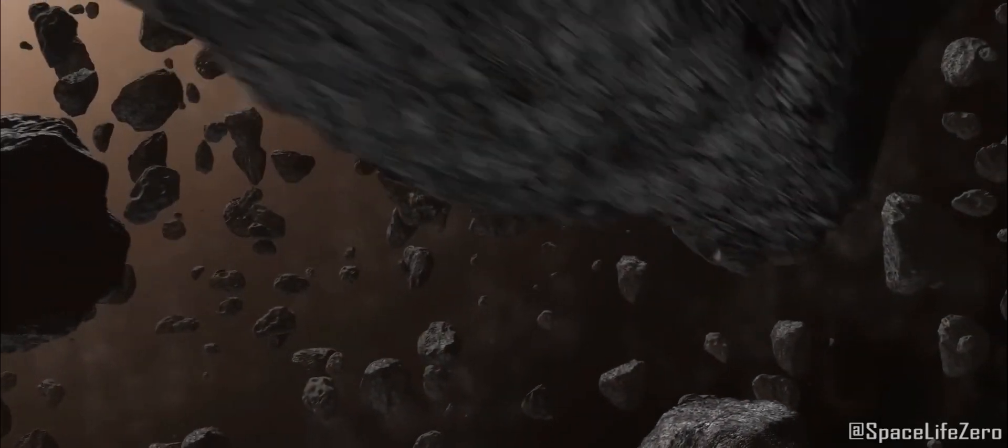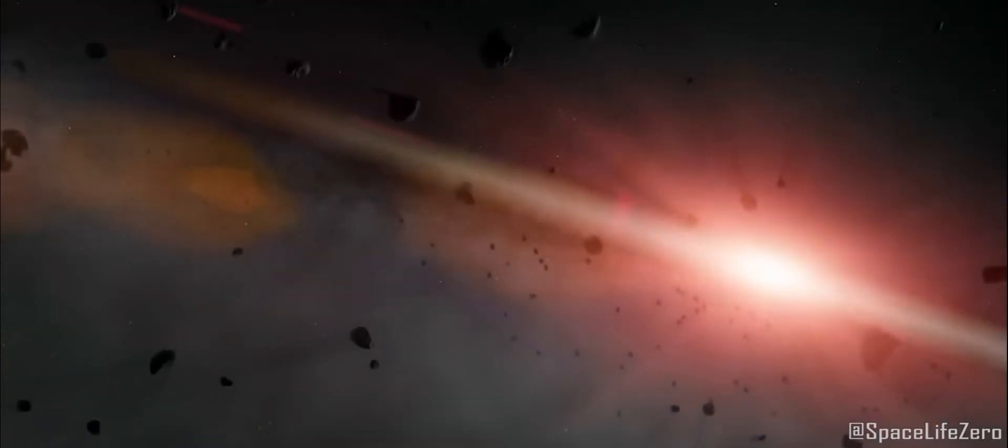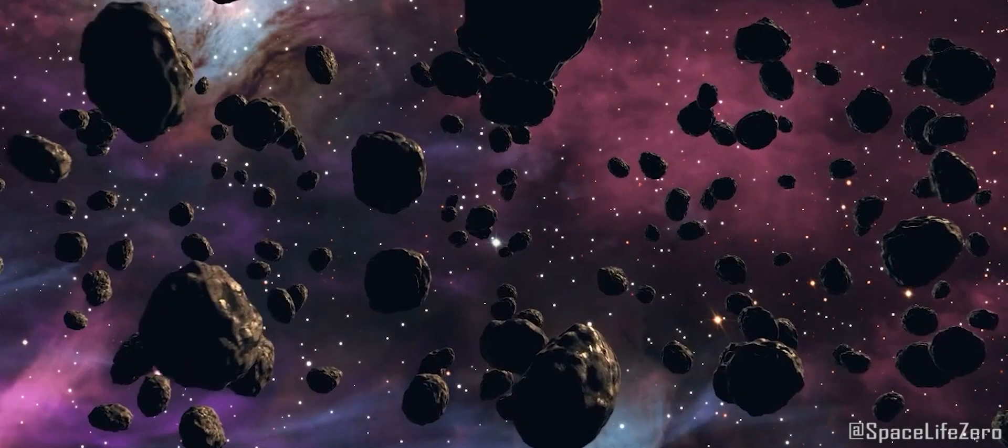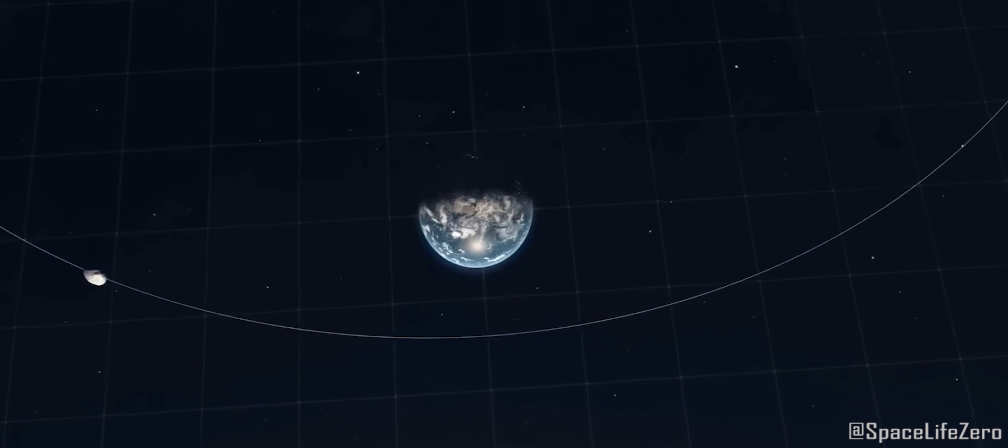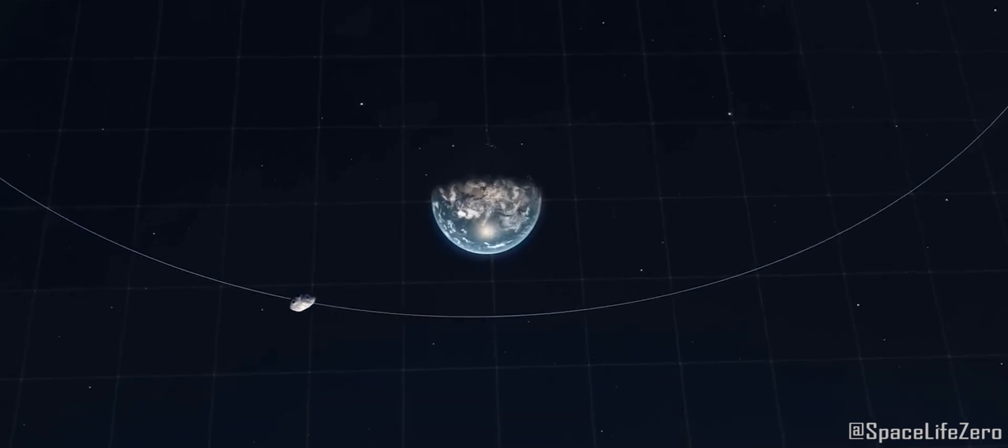Asteroids are remnants of the early solar system, often dubbed as cosmic leftovers. They range in size from small pebbles to colossal giants, and their orbits can sometimes bring them uncomfortably close to our beloved planet.